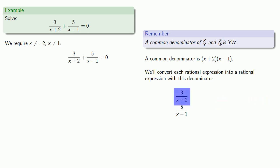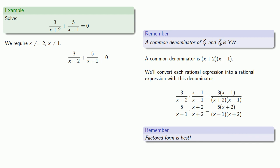And we'll convert each rational expression into a rational expression with the denominator x plus 2 times x minus 1. This first rational expression is missing the x minus 1 factor. So we'll multiply numerator and denominator by x minus 1. And likewise, this second fraction is missing the factor x plus 2. So we'll multiply numerator and denominator by x plus 2. And remember that factored form is best. So unless we have a good reason to multiply them out, we'll leave things in factored form.